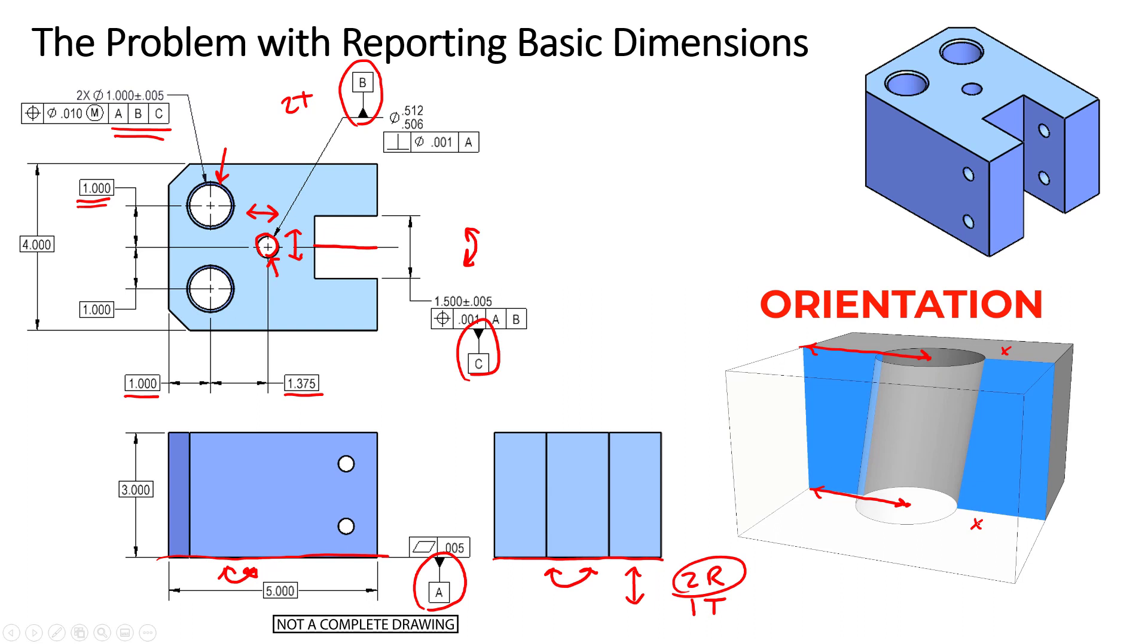For this reason, a single set of X-Y dimensions by themselves is not sufficient, and you must have a reported positional error. That's exactly how the positional callout works.